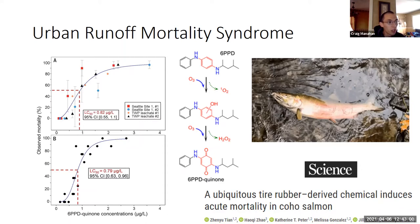Now that we know URMS is caused by 6-PPD and 6-PPD-quinone from tires, the question is what are our next steps as Washington Ecology, as a state, and from the tire industry's perspective. Some people would say we should immediately ban 6-PPD in tires to reduce the risk to salmon. Others say we need a risk assessment to quantify the risk. At Washington Ecology's Hazardous Waste and Toxic Reduction program, we deal with similar types of problems and use a process called alternatives assessment to help reduce risk.